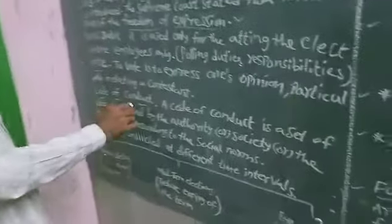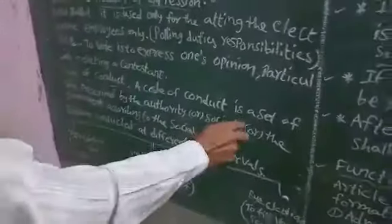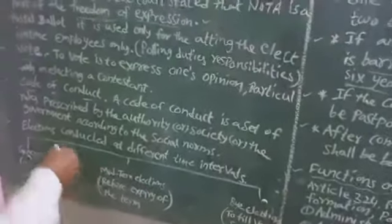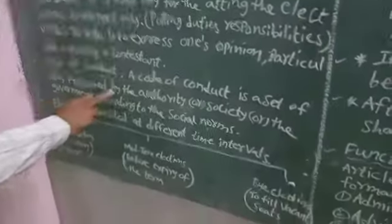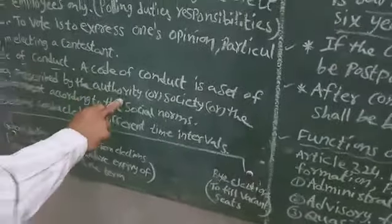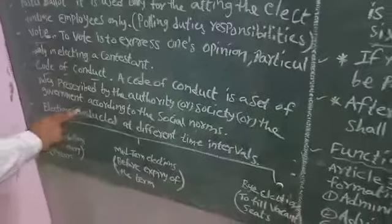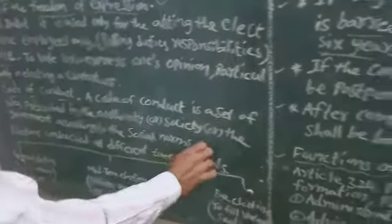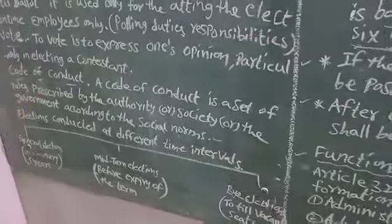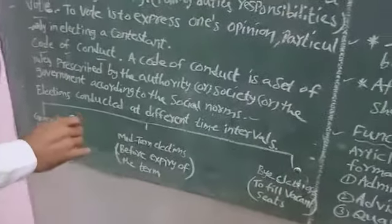Next, the code of conduct. A code of conduct is a set of rules prescribed by an authority, society, or government according to social norms. This is the model code of conduct used during elections.